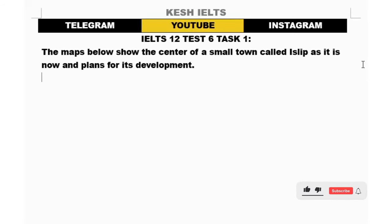This is from IELTS 12 Test 6 Task 1. The maps below show the center of a small town called Islep as it is now and plans for its development. I didn't put the pictures here because I hope you have it next to you. You can look it up from IELTS 12 Test 6 Task 1. I'll show you how simple it is to compare and illustrate the ways it's been changing.